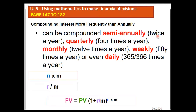The frequency is represented by m. You must multiply n by the frequency m, and divide r by the frequency m. For example, if it's semi-annual, m equals 2, so n becomes 2 times the number of years and r is divided by 2. If it's quarterly, m equals 4. As shown in the formula, when you have a frequency other than annual, always multiply n by m and divide r by m.